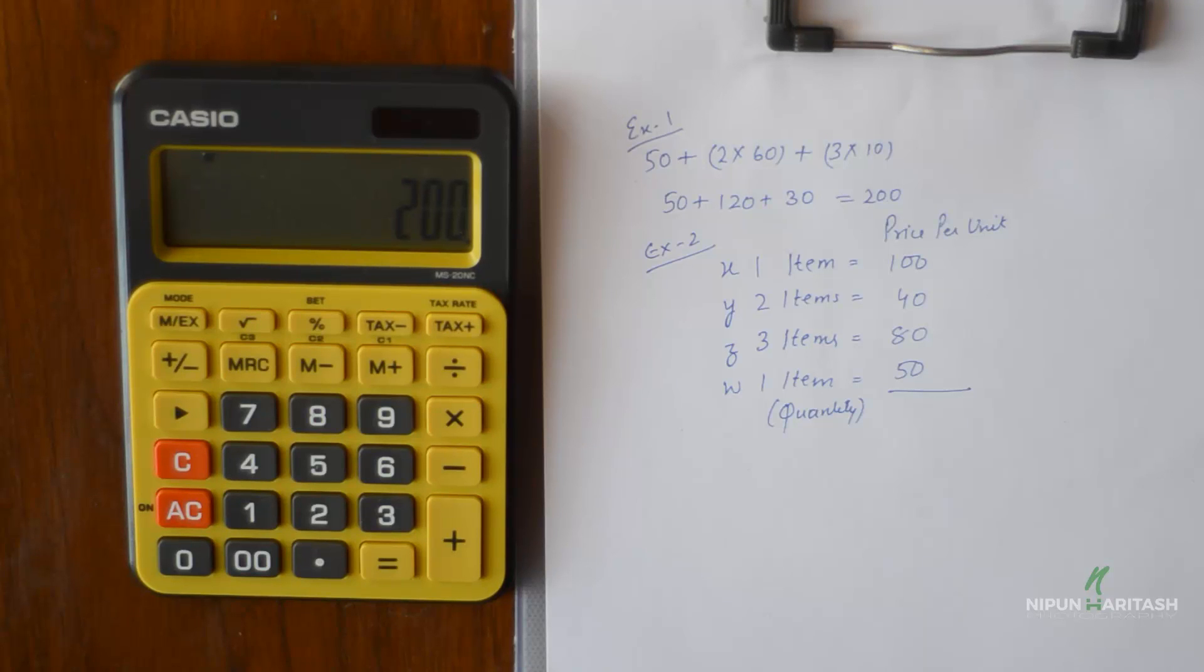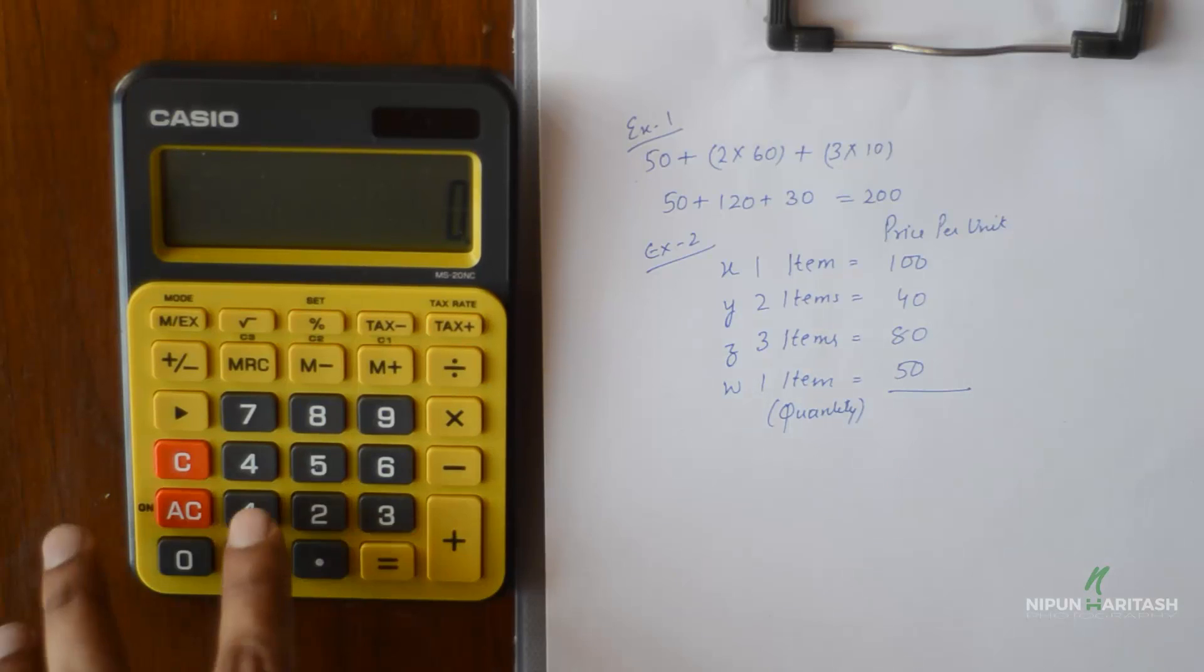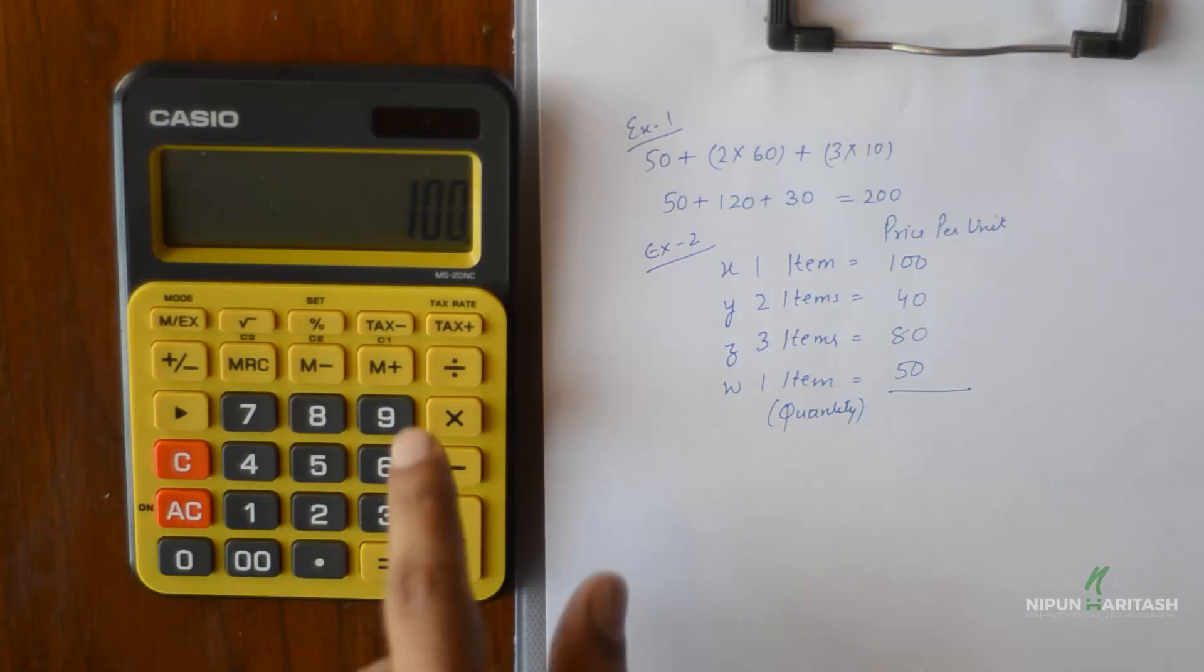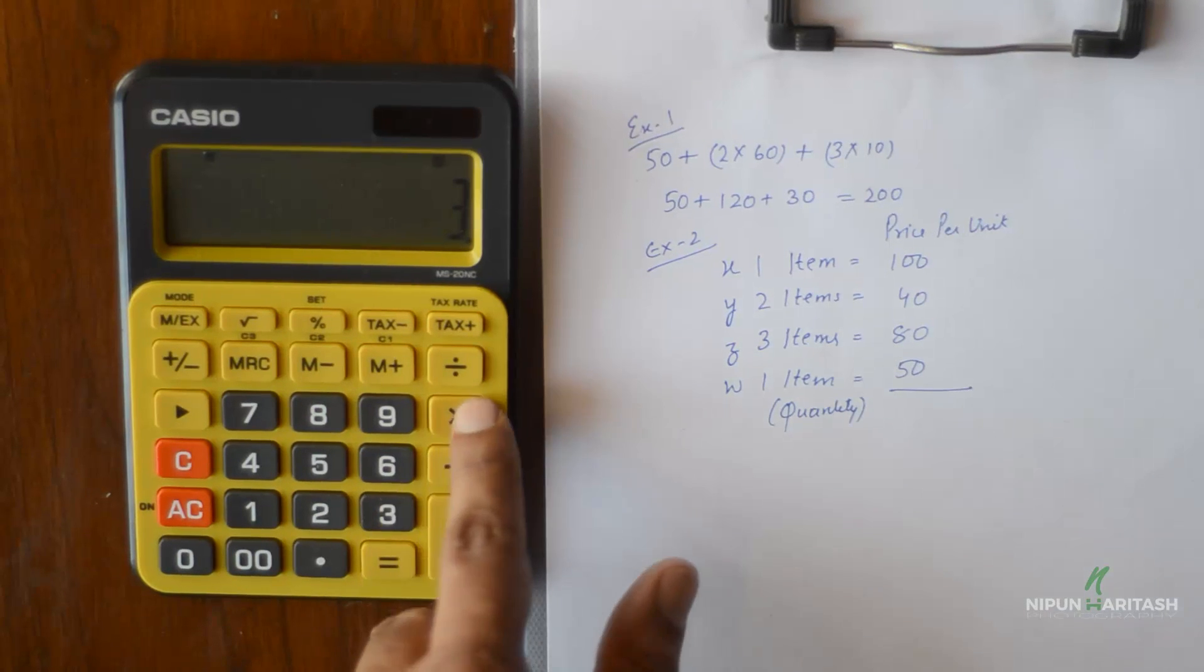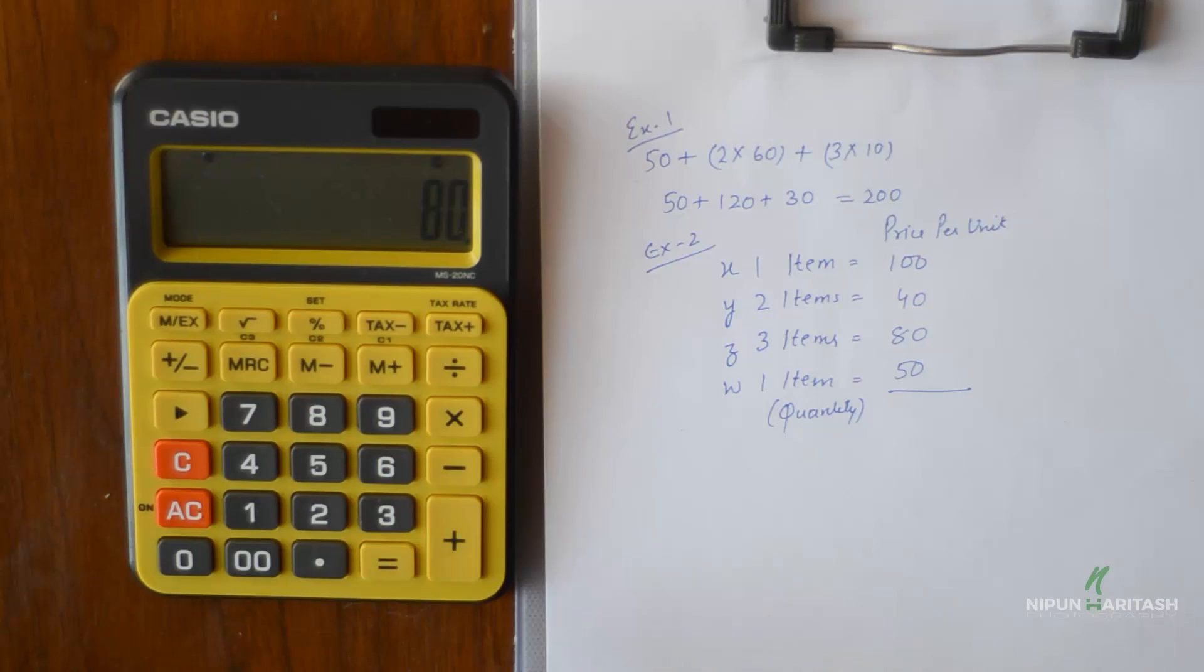Similarly in example 2, I have four different items and you can have different quantities of those items. X item has one quantity, Y item has two quantities, Z has three, W has one, and the price per unit of these quantities is also mentioned. So let's do this calculation. I'll press 100 and M+, then the second item has two quantities of 40, M+. Third item has three quantities of 80 price per unit which is 240, then M+. And the last item has one quantity of 50, so 50 is added on top of everything. So MRC is 470, sum total also becomes 470.